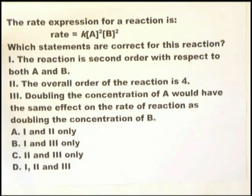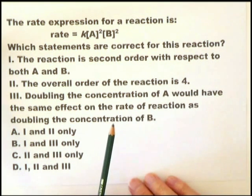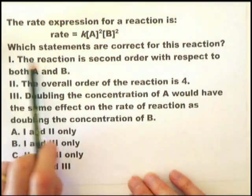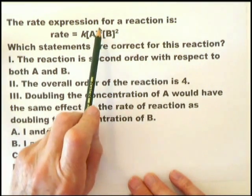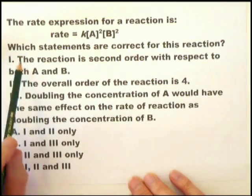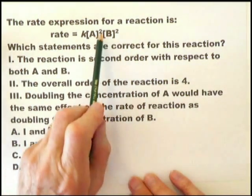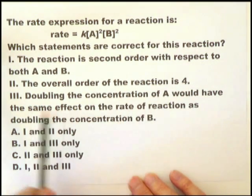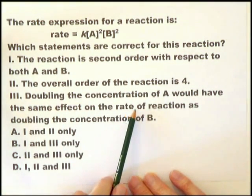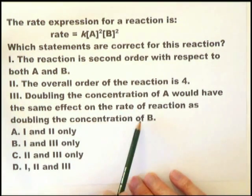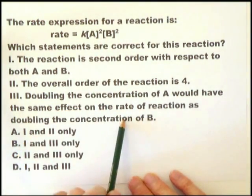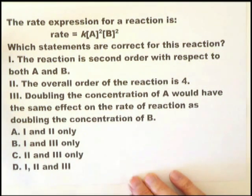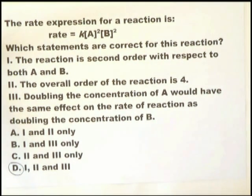This is a question with a lot of ideas in it, and it does take some time to read through the ideas. However, it's easy to see which ones are correct. The reaction is second order with respect to both A and B. That is true. 2 and 2. The overall order of the reaction is 4. 2 plus 2 equals 4. Doubling the concentration of A would have the same effect on the rate of reaction as doubling the concentration of B. That is clearly correct. All three are now correct. So 1, 2, and 3. Very straightforward.